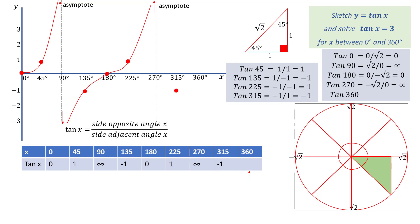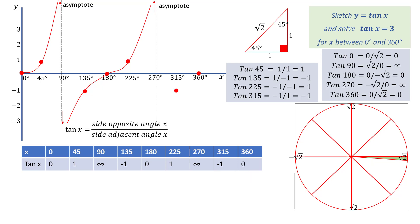Finally, for the angle 360 degrees, consider the right angled triangle in the fourth quadrant and decrease the angle at the centre to obtain 360 degrees. The side opposite the angle approaches 0 and the side adjacent approaches root 2, therefore tan 360 degrees equals 0 divided by root 2, which is 0. Remember that tan of 270 degrees is infinity when completing the curve between 0 and 360 degrees.